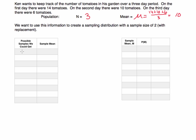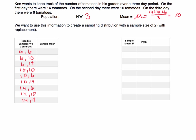I'll list out the possible samples we could get from the population. I could get six and six, six and ten, six and fourteen. Then ten and ten, ten and six, and ten and fourteen. I could also get fourteen and six, fourteen and ten, and fourteen and fourteen. Those are all the possible combinations when randomly selecting two observations with replacement.